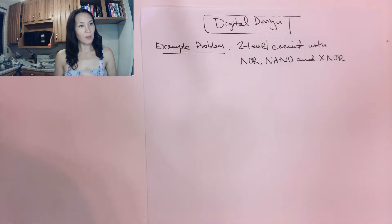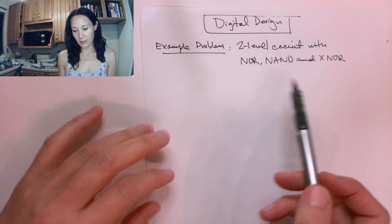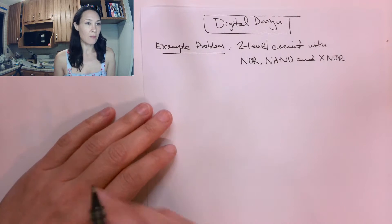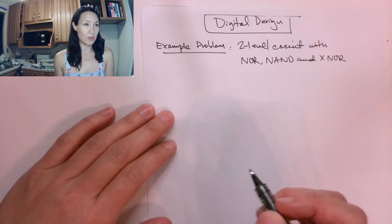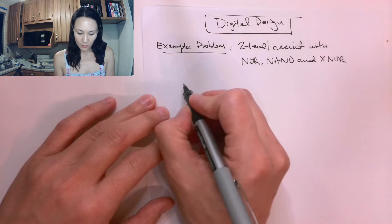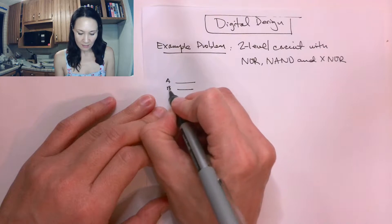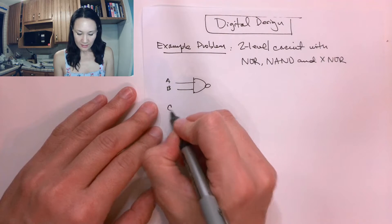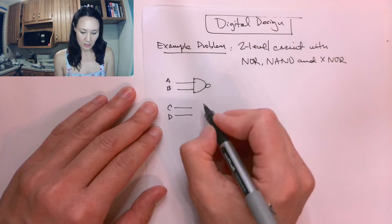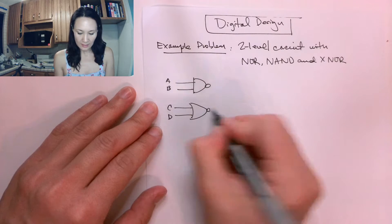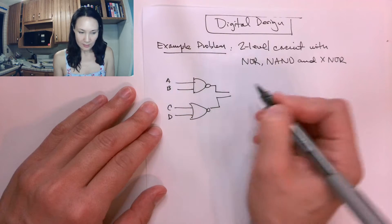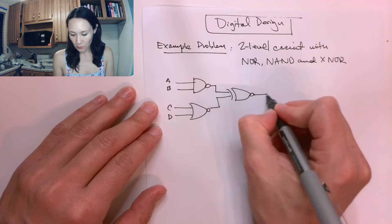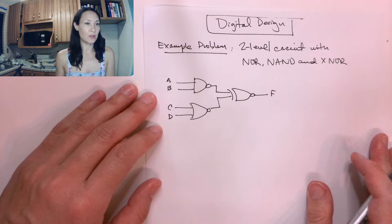Let me show you an example of a circuit that contains a NOR, a NAND, and an XNOR, just so you can see what it looks like in a basic logic circuit and also how to construct the truth table for that circuit. So suppose we have inputs A and B going into a NAND gate, and inputs C and D going into a NOR gate, and then we take those outputs and pipe them as inputs into an XNOR. So here's our logical circuit.